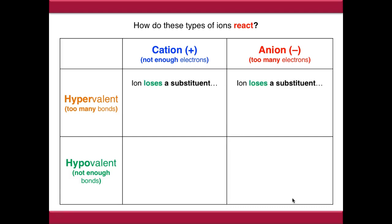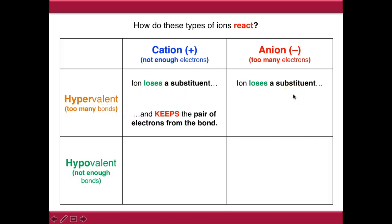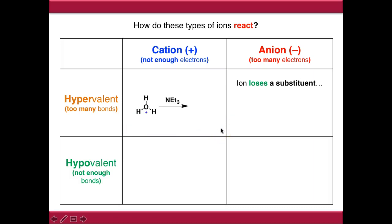If we look at hypervalent ions, they react by losing a substituent - they're making too many bonds, so they need to get back to something neutral by losing a substituent. In the case of cations, they need to keep the pair of electrons from the bond. An example of this is the hydronium ion we created before: we treat it with a mild base and push the electrons from this bond back onto oxygen again.